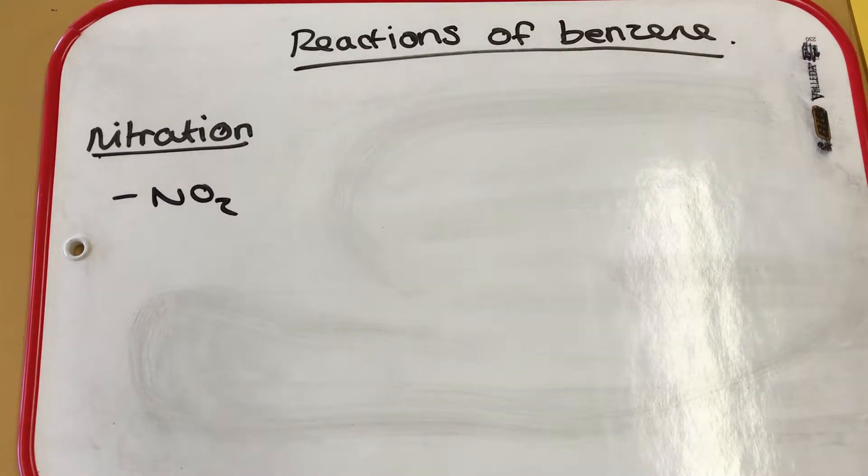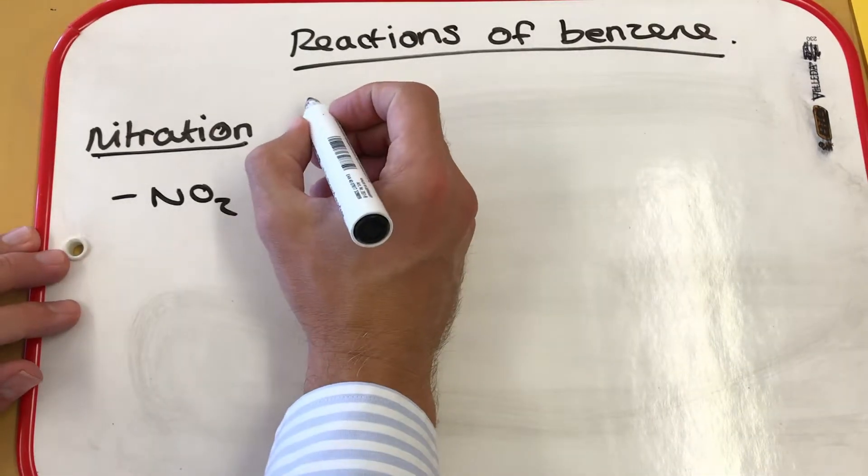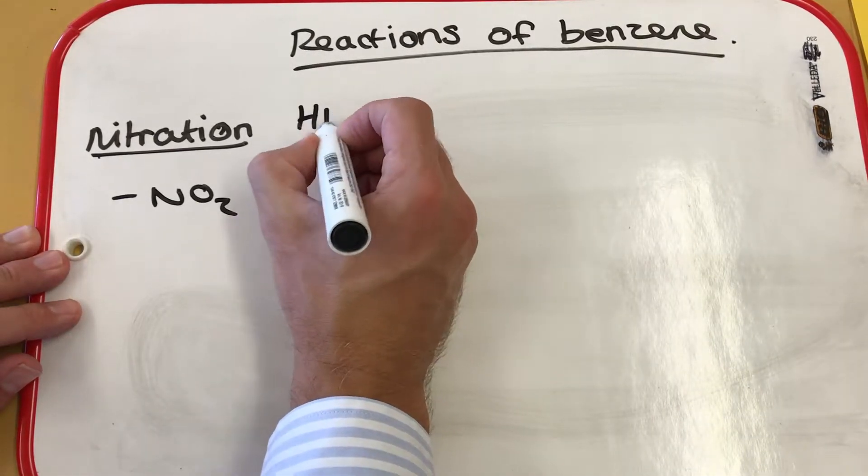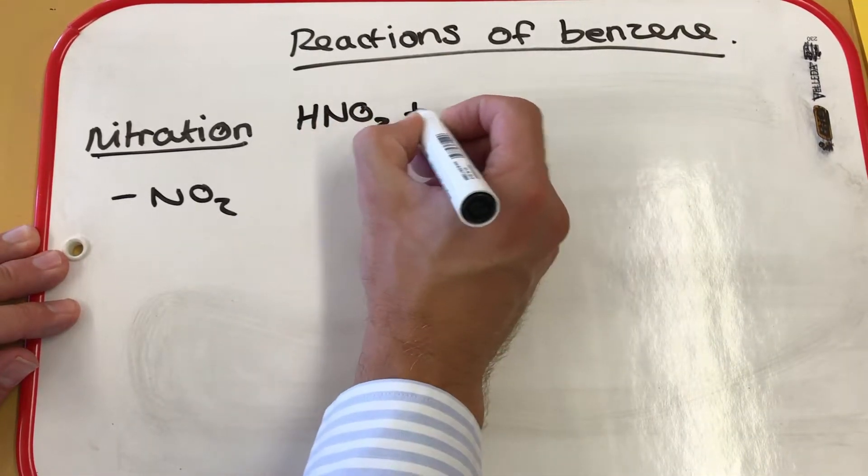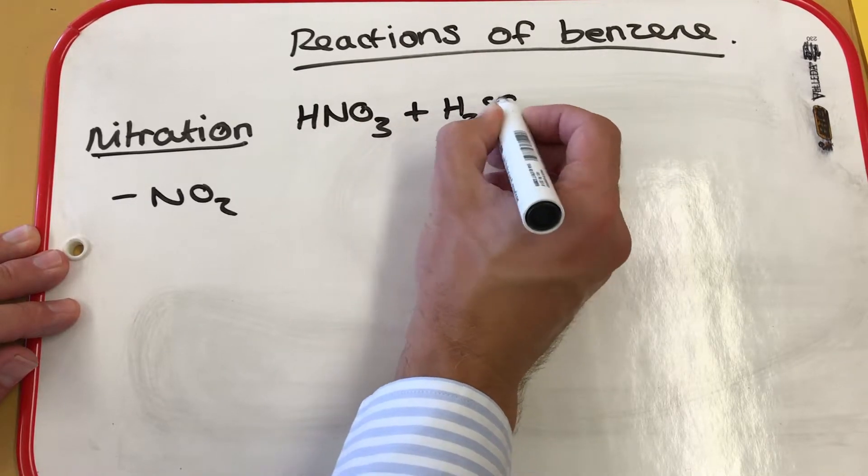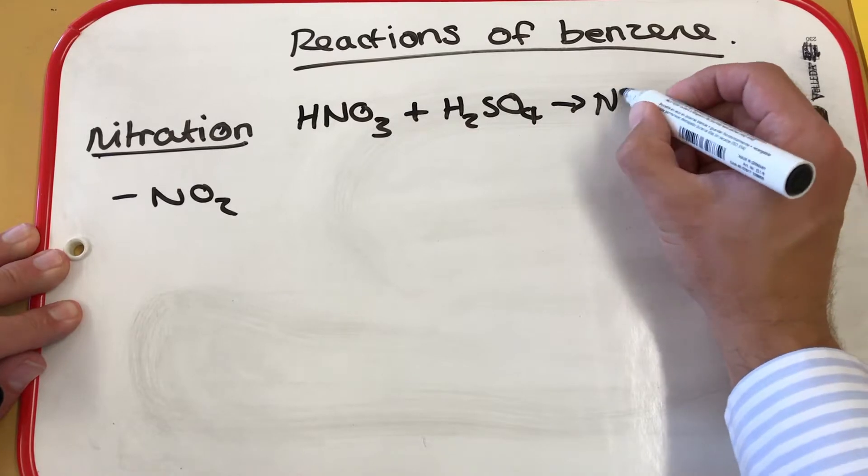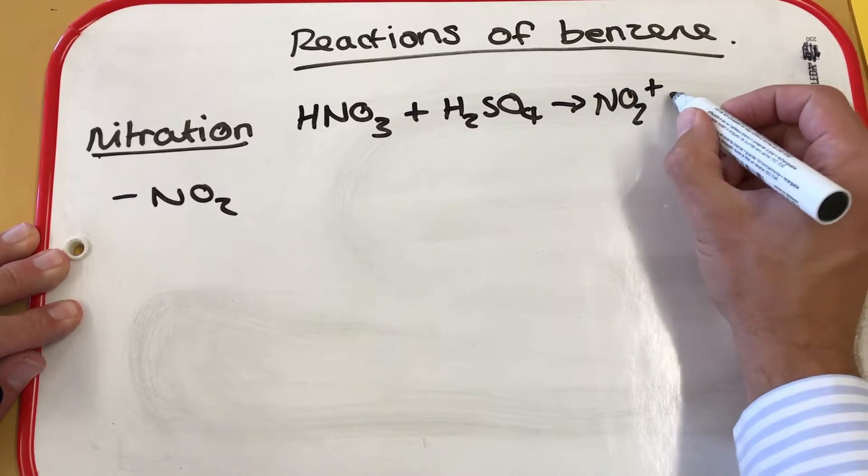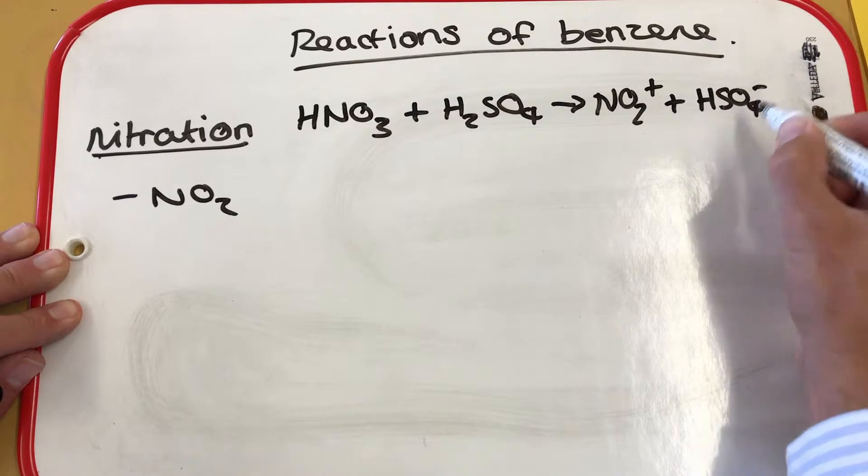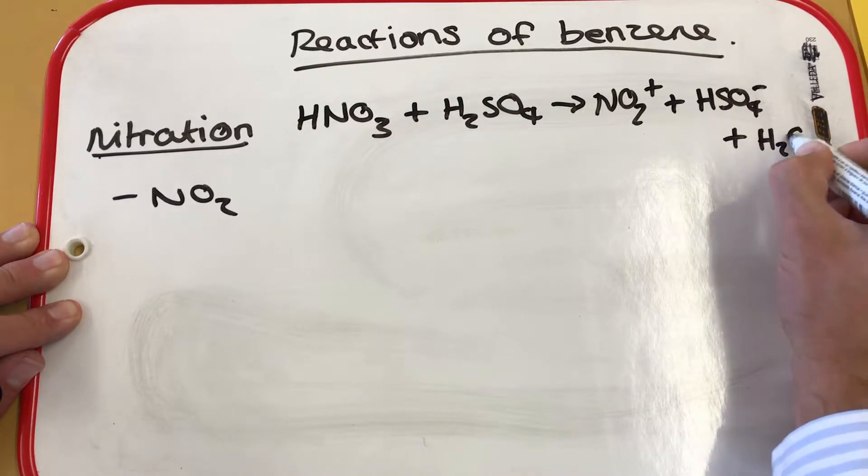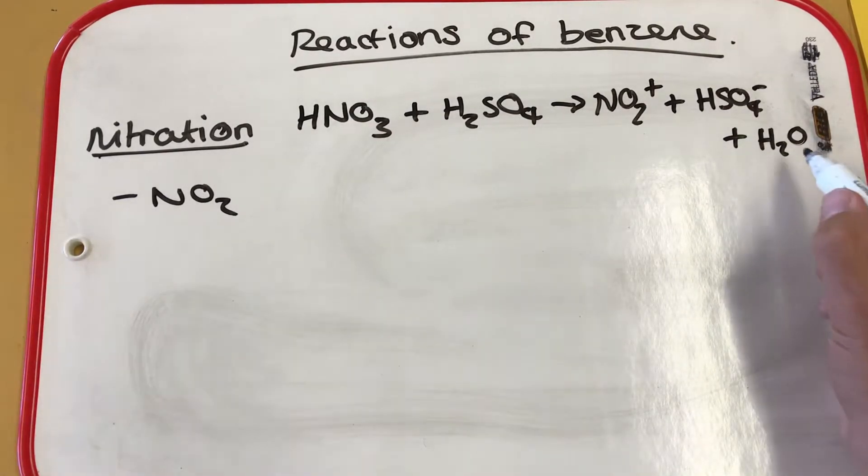So I'll rewrite the equation up here again so we can keep referring back to it. So HNO3, concentrated HNO3, concentrated sulfuric acid, produces the electrophile NO2+, HSO4- and H2O. This should be on the same line, I've just run out of space here on the board.